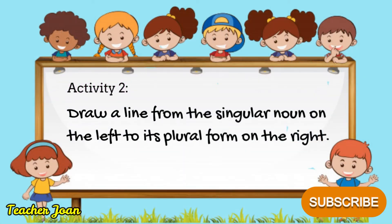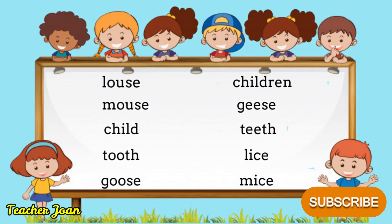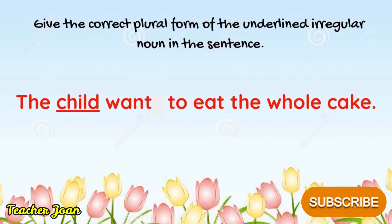Activity number two: Draw a line from the singular noun on the left to its plural form on the right. Activity number three: Give the correct plural form of the underlined irregular noun in the sentence. The child wants to eat the whole cake.